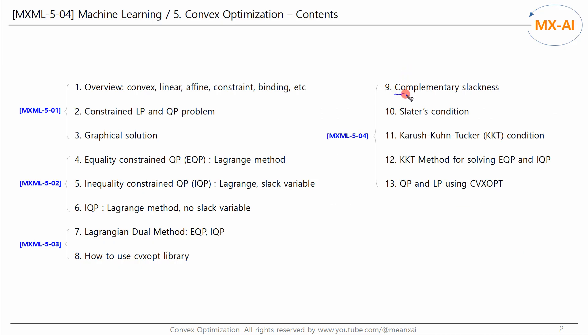First, let's look at the basic concept of complementary slackness through simple examples. Next, let's look at the Slater's condition that can guarantee strong duality. And let's take a look at the Karush-Kuhn-Tucker conditions. Then we will use the KKT method to solve optimization problems with equality and inequality constraints. Lastly, we use the CVXOpt library to solve the QP and LP problems.